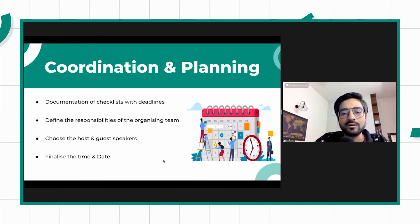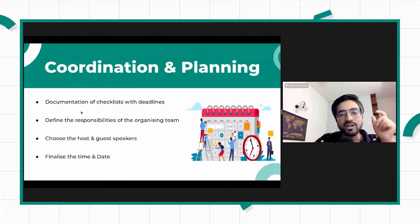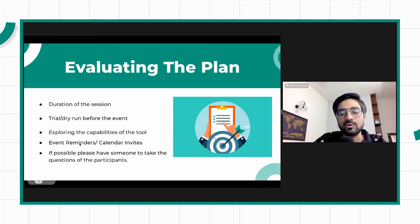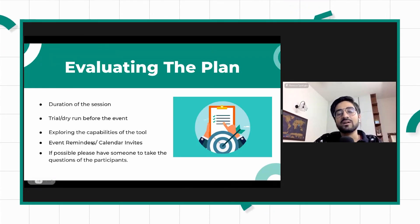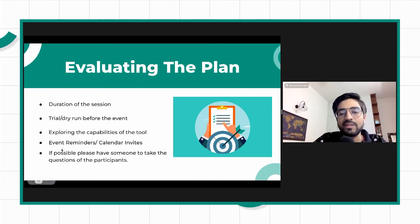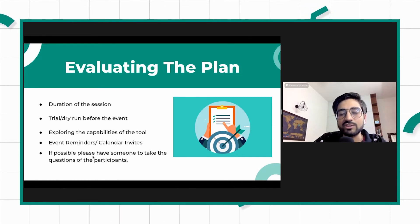For coordination, create a checklist, define responsibilities, choose the host and guest, finalize date and time. For evaluating the plan, make sure everything is working fine, have a dry run, check all capabilities of the tool, and make sure reminders have worked. Always have someone as part of the community team as one of the recipients of those reminders so you can check the content went fine. If you have someone in your team, don't host events alone — have someone take questions from participants as well.